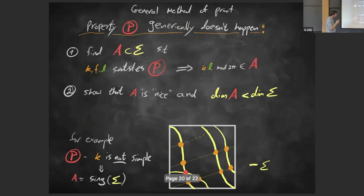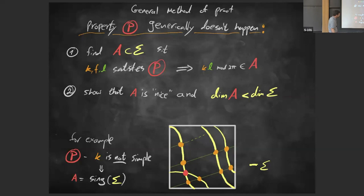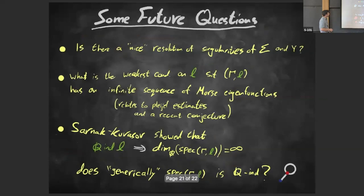The general method of proof: given a property P that I want to show generically doesn't happen, I find a set A in the moduli space Σ that controls P — whenever a triple satisfies the bad property P, the relevant point in Σ lies in A. I then show A is nice and that the dimension of A is strictly smaller than the dimension of Σ. For example, if P is k being non-simple, A would be the singular set of Σ.